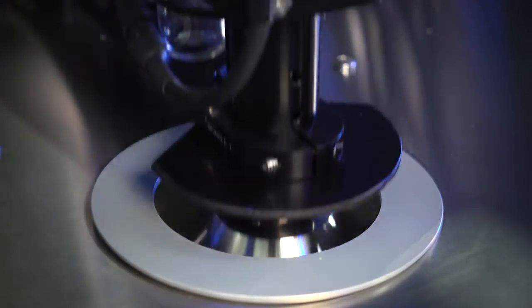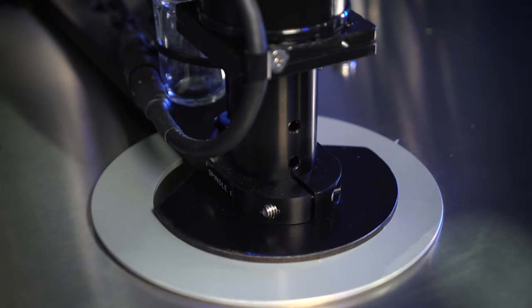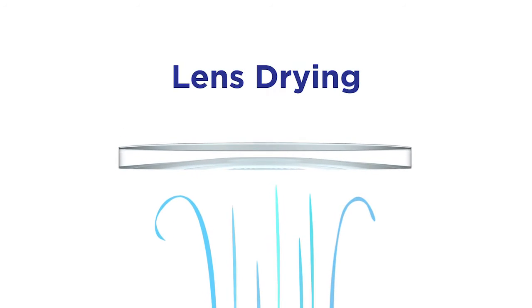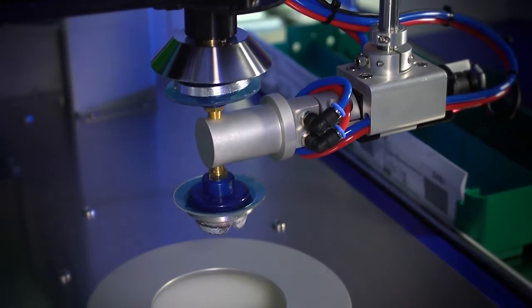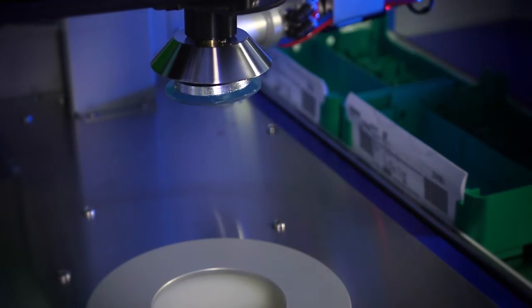The lens is now transferred to the drying module prior to the coating process. This is done with an integrated clean air filtration system using your existing shop air. Meanwhile, another lens has been loaded into the wash chamber by the robotic arm.